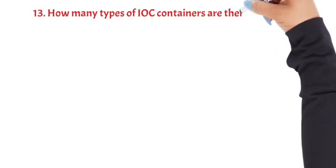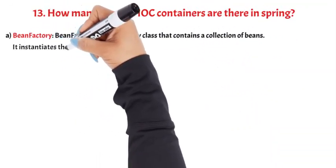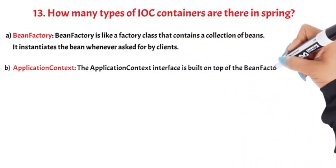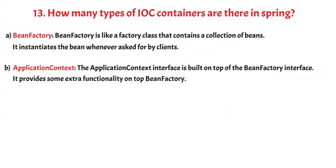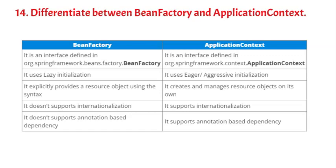Question 13: How many types of IOC containers are there in Spring? A. BeanFactory: BeanFactory is like a factory class that contains a collection of beans. It instantiates the bean whenever asked for by clients. B. ApplicationContext: The ApplicationContext interface is built on top of the BeanFactory interface and provides some extra functionality. Question 14: Differentiate between BeanFactory and ApplicationContext. BeanFactory uses lazy initialization; ApplicationContext uses eager/aggressive initialization. BeanFactory explicitly provides a resource object using syntax; ApplicationContext creates and manages resource objects on its own. BeanFactory doesn't support internationalization; ApplicationContext does. BeanFactory doesn't support annotation-based dependency; ApplicationContext does.